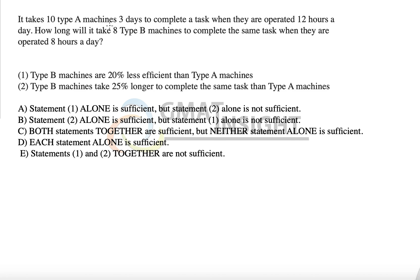It takes ten Type A machines and three days to complete a task when they are operated 12 hours a day. Now there is a concept which you can find in the concept videos on my YouTube channel that manpower into time upon work is equal to constant. So that's the principle that I'm going to apply.